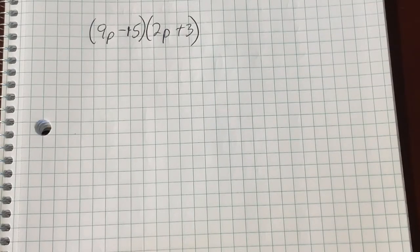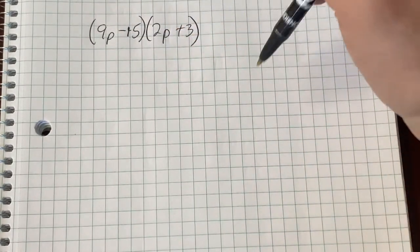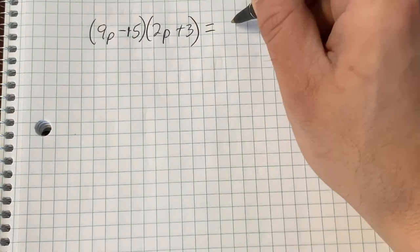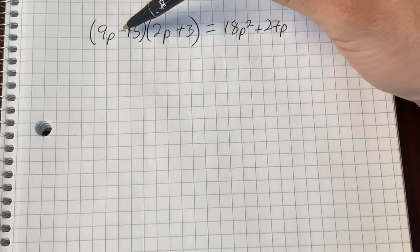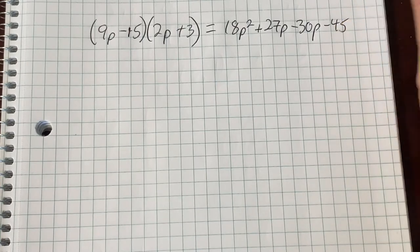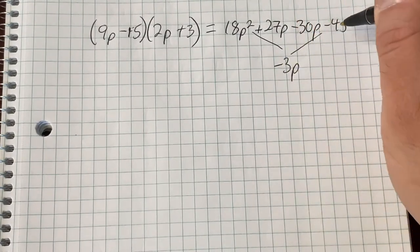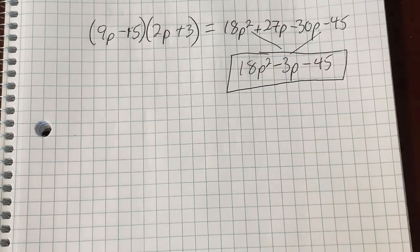Let's go ahead and FOIL this right here. We've got these two binomials, 9p minus 15, multiplying 2p plus 3. Maybe you want to pause the video, try it on your own, come back and check the answer. But I'm going to talk through the answer right now. So I'm going to do this without drawing the arrows because you can look at the previous problem where I had the arrows here. I'm just going to talk myself through FOIL, essentially. First, 9p times 2p is going to be 18p squared. Outers, 9p times 3 plus 27p. Inners, negative 15 times 2p is going to be negative 30p. And last, negative 45 when I do negative 15 times 3. These two guys here are friends. 27 minus 30 is going to give me negative 3p. We have the minus 45 at the end here. We have the 18p squared in the beginning here. And there's our answer.